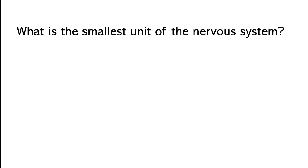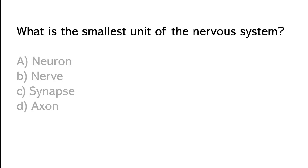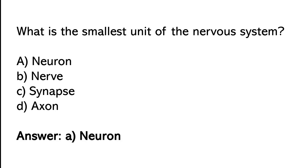What is the smallest unit of the nervous system? Neuron, Nerve, Synapse, Axon. So the correct answer is option A. Neuron is the smallest unit of the nervous system.